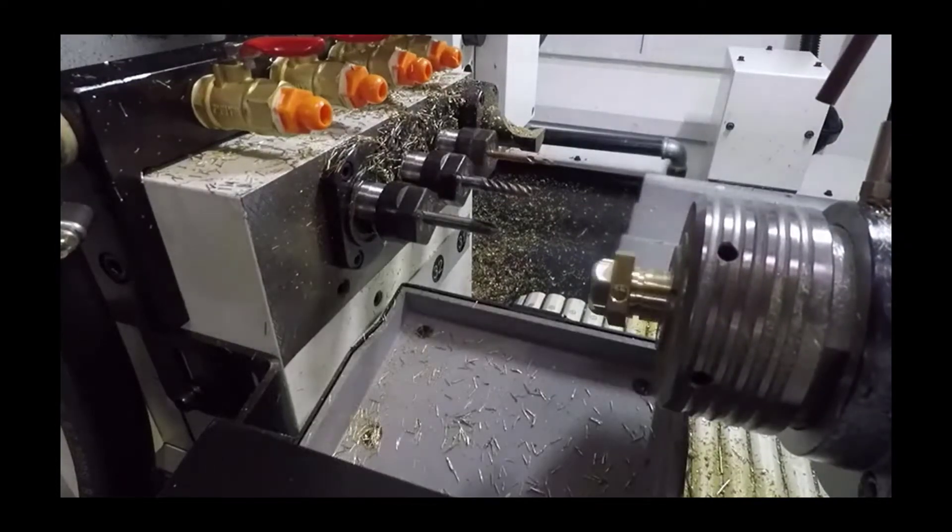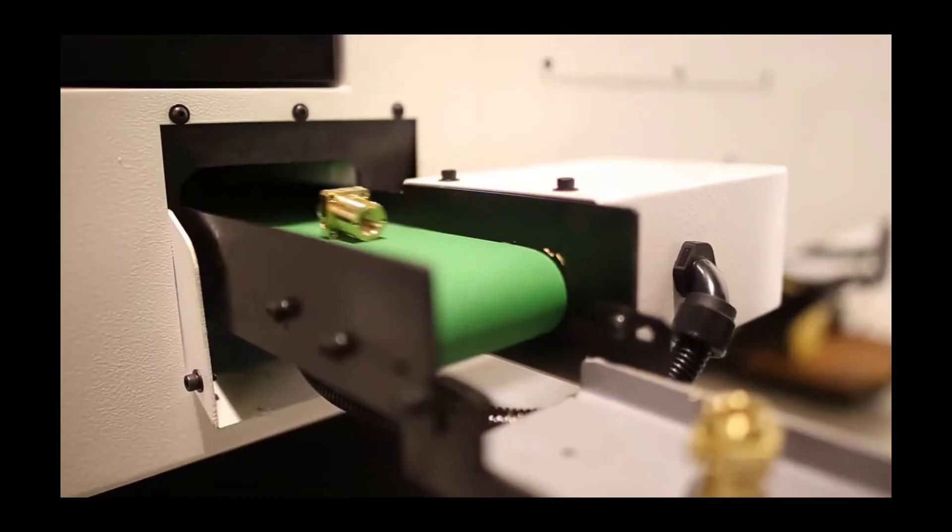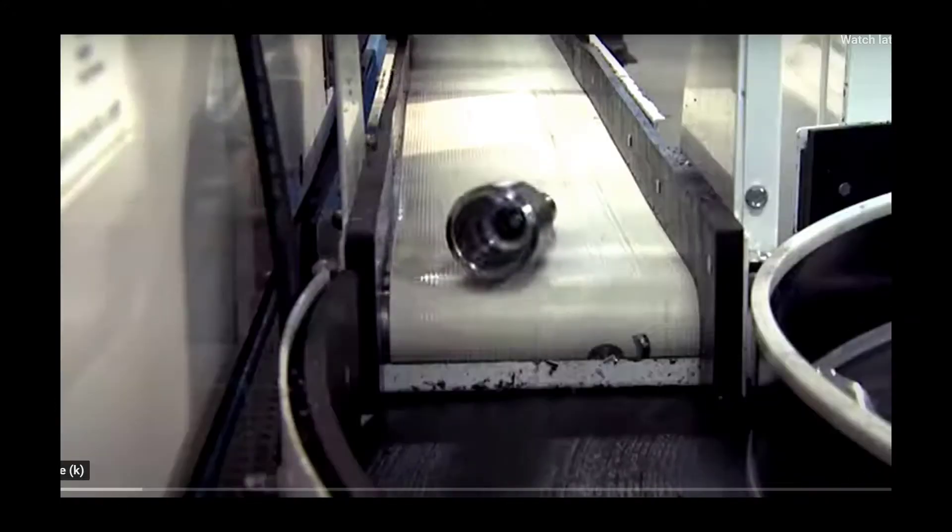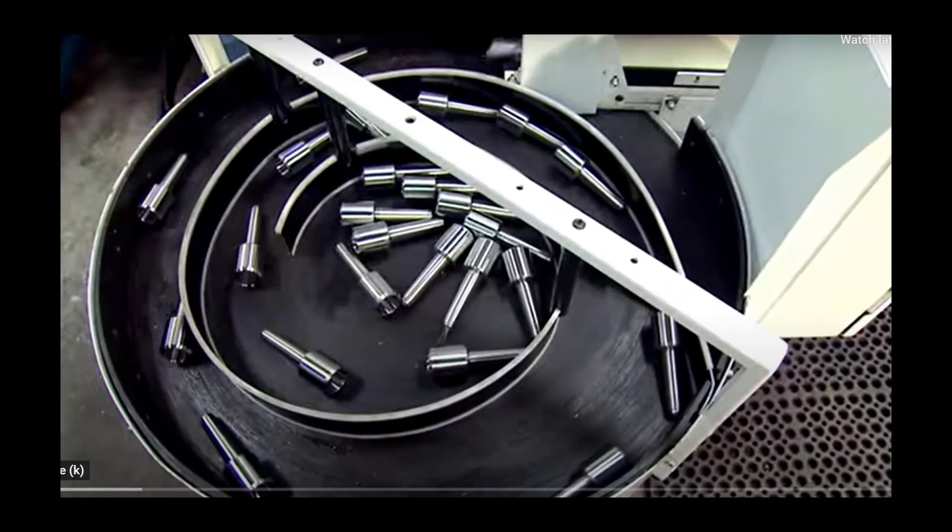The part ejector pushes the finished part out of the subspindle into a part catcher, then is placed on a conveyor that drops in a basket outside the machine. The conveyor can also place the parts on an optional rotary table to protect delicate parts from dings and scratches.